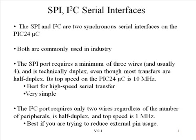As you can see, the I2C interface is half duplex. It's lower speed, a maximum of 1 megahertz. However, the big plus is it only uses two wires, in contrast to SPI, which uses three wires plus an additional wire for every component. Therefore, it is the best if you're trying to reduce external pin usage.